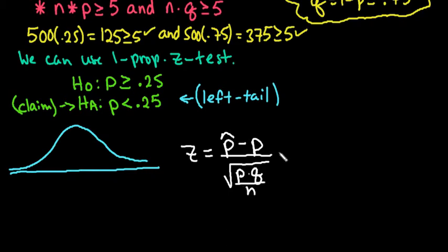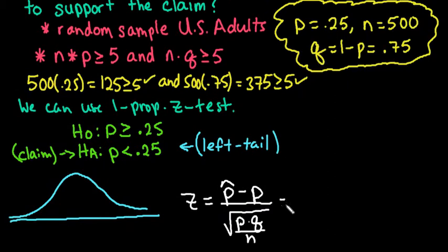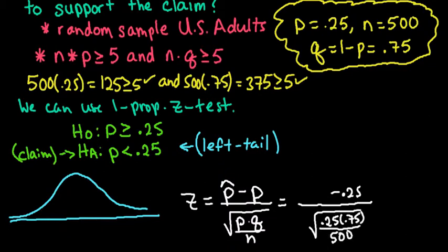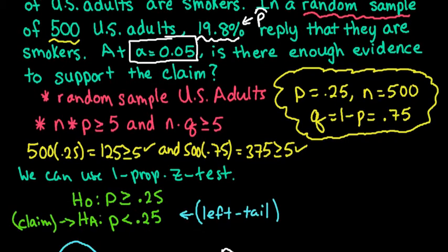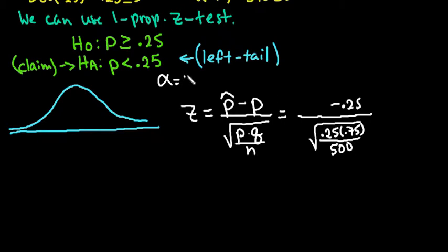All right, so P hat minus P and then PQ over N. So we already wrote down what P and Q are. So we know that P is 0.25, and we know that Q is 0.75, and we know that N is 500. So the only thing that we are missing is P hat. So let's go back up here. P hat is 19.8%, and we always write this as a decimal. So this is going to be our P hat. And we also need to write down our alpha level because we will use that to help us make our decision. So our alpha is 0.05, and our P hat is 0.198.